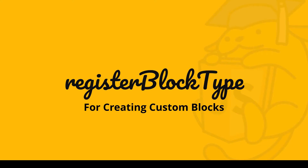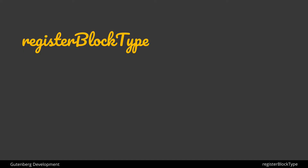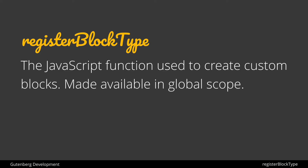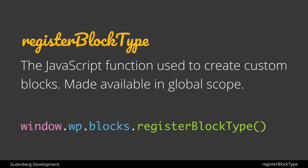The registerBlockType function is at the heart of creating custom blocks in the new Gutenberg editor, so it's really important that we take a thorough look at how it works. registerBlockType is a JavaScript function used to create custom blocks. WordPress makes this function available in the global scope, so we could access it like window.wp.blocks.registerBlockType. The 'window' just tells us it's saved in the global window object — we don't actually have to write it, it's just for demonstration purposes.